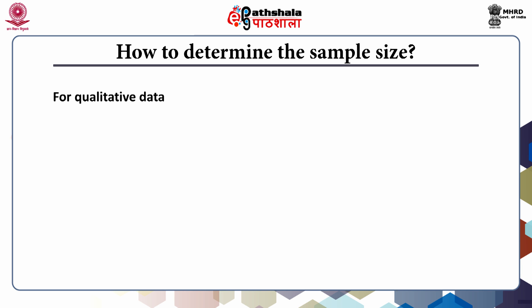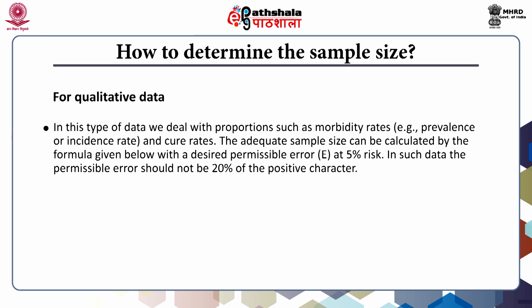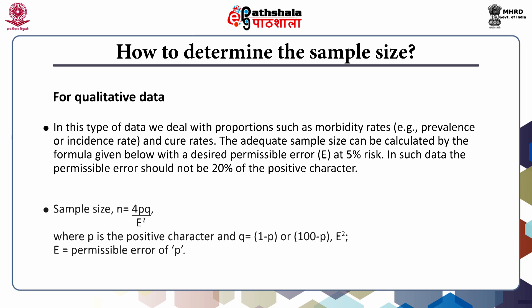For qualitative data, in this type of data we deal with proportions such as morbidity rates — for example, prevalence or incidence rates and cure rates. The adequate sample size can be calculated by the formula given below with the desired permissible error at 5% risk. In such data, the permissible error should not exceed 20% of the positive character. Sample size N is given as 4pq by E squared, where p is the positive character, q is 1-p (or 100-p), and E is the permissible error of p.